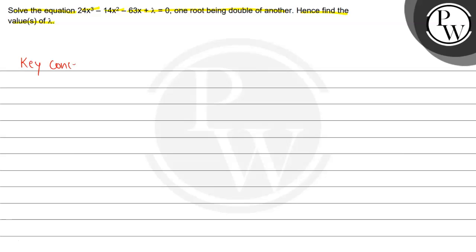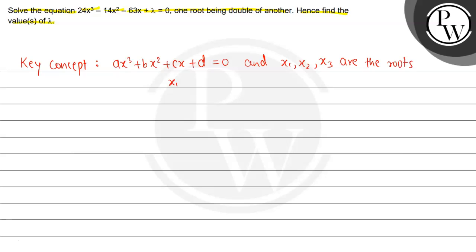The key concept is: if a polynomial equation in the form ax³ plus bx² plus cx plus d equals 0, and x₁, x₂, x₃ are the roots, then the sum x₁ + x₂ + x₃ equals -b/a, the sum of products x₁x₂ + x₂x₃ + x₃x₁ equals c/a, and the product x₁x₂x₃ equals -d/a. We are going to use this concept.